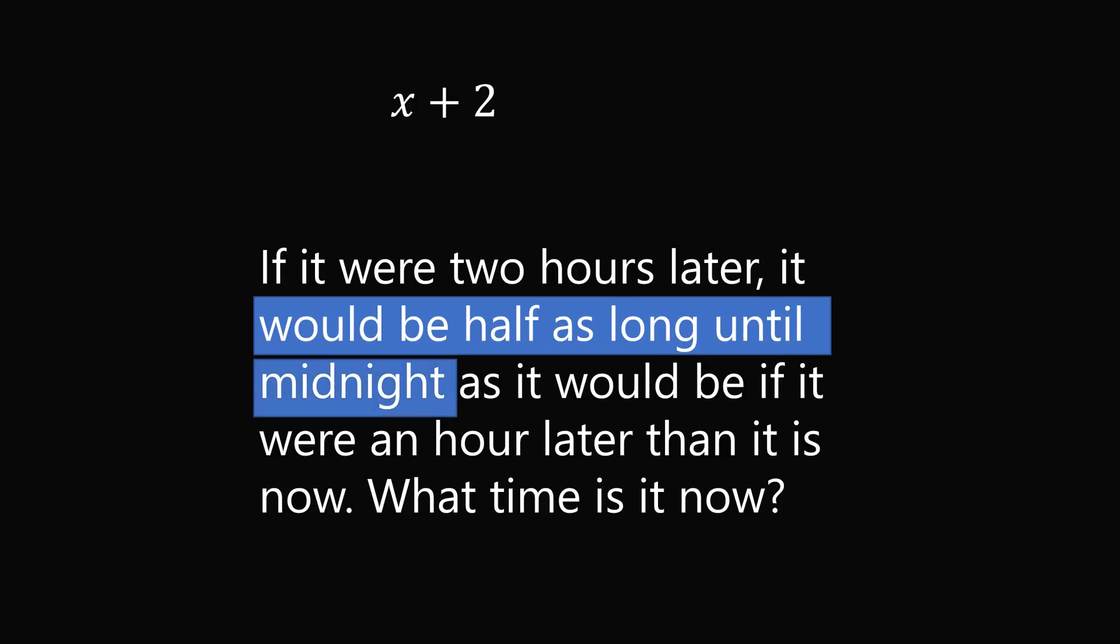At that time it would be half as long until midnight. Let's use 24-hour time so that midnight is represented by 24. The time to midnight two hours later will be 24 minus the quantity x plus 2.